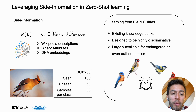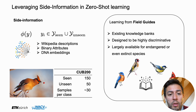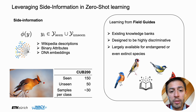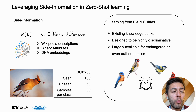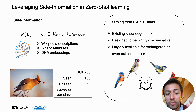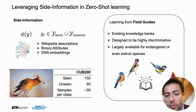Let's look at what we propose in this work. We propose how to solve zero-shot learning using existing information from field guides. What are field guides? They are existing knowledge banks, designed to be highly discriminative, and largely available for endangered or even extinct species. They were designed with the idea that if you were to go into the forest with only this book — containing descriptions and illustrations of each species — you should be able to recognize them. And this is what we tackle in this work.